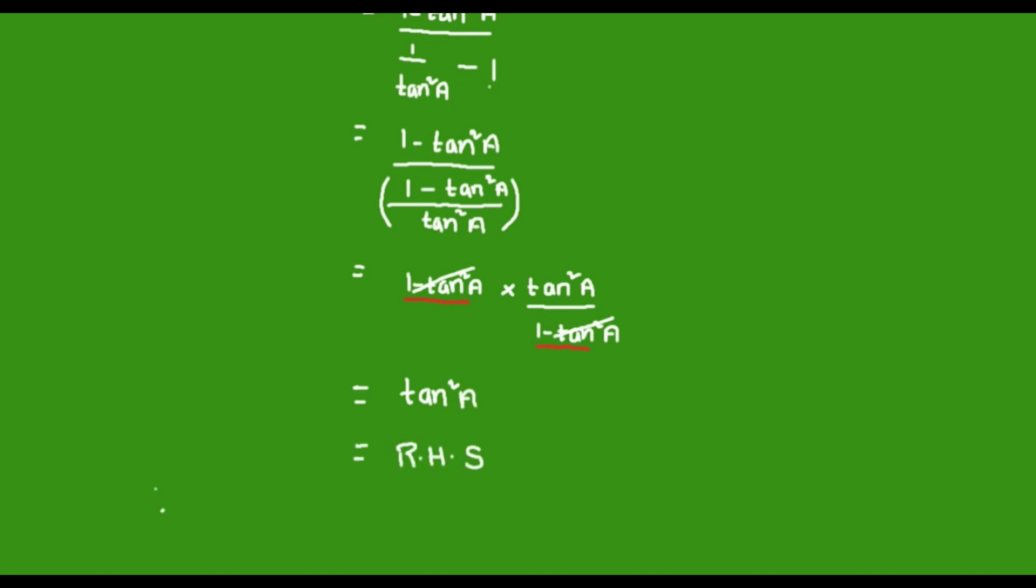Problem was proved. Therefore (1 - tan²a)/(cot²a - 1) = tan²a.